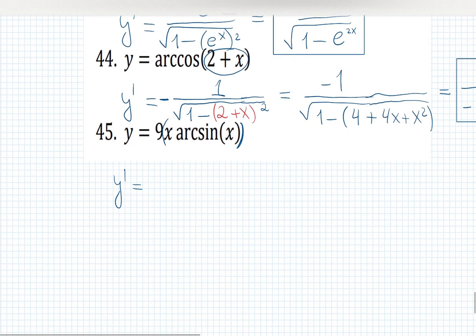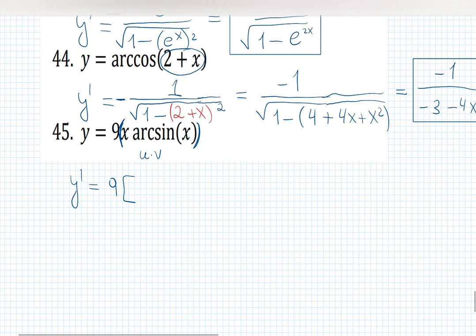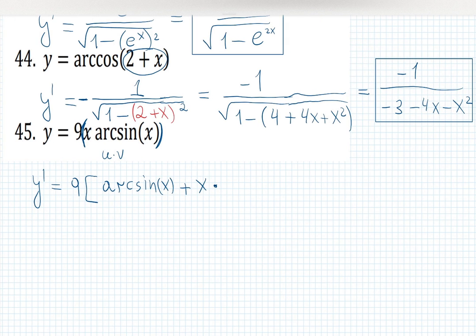But I always tell you, you don't have to match the answer. You're doing great. Learn the way you understand. And this is the best way. Just make sure it's correct. u times v. 9 and in the product rule. Derivative of x is 1 copy arcsine of x plus copy x times derivative of arcsine.